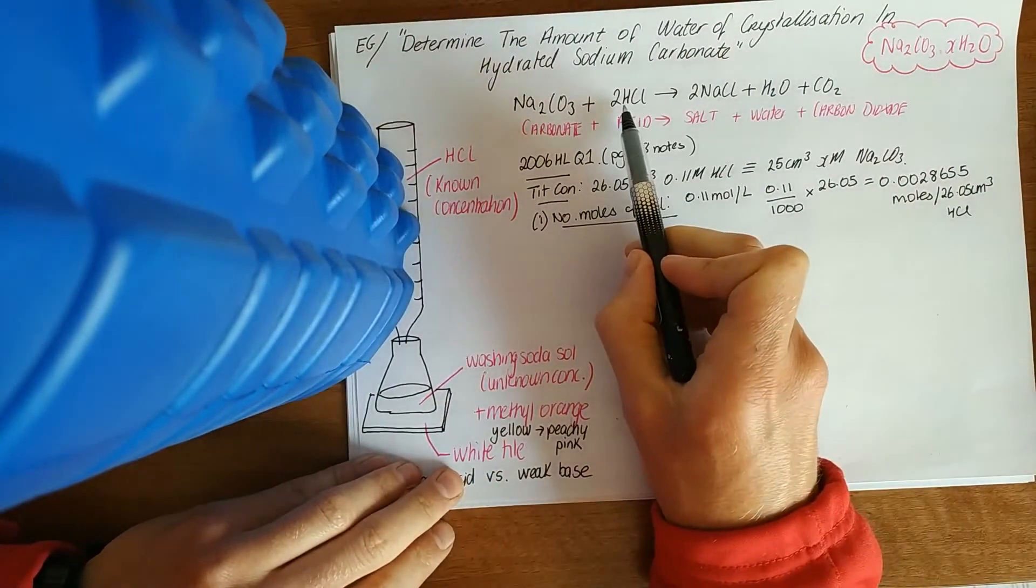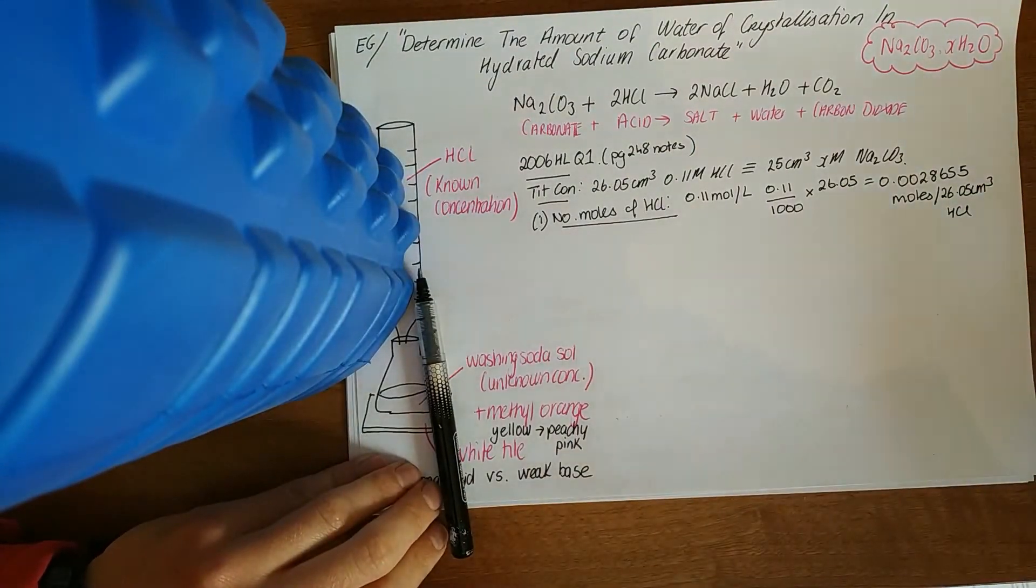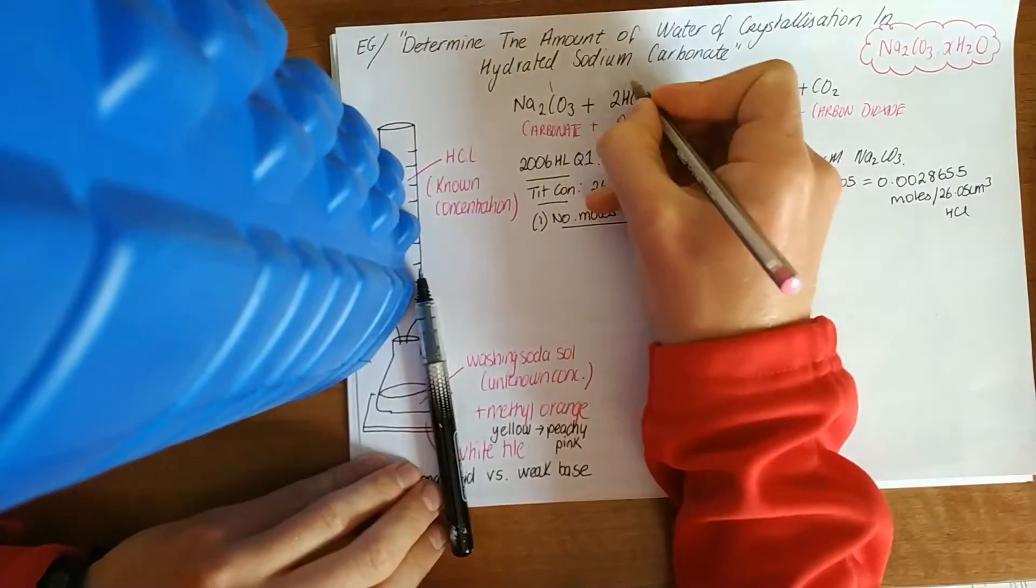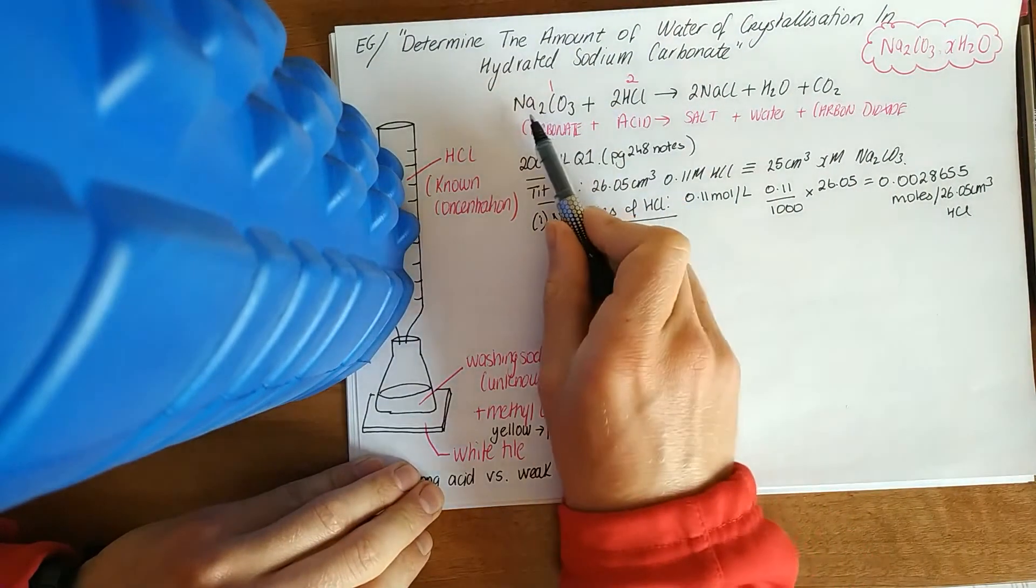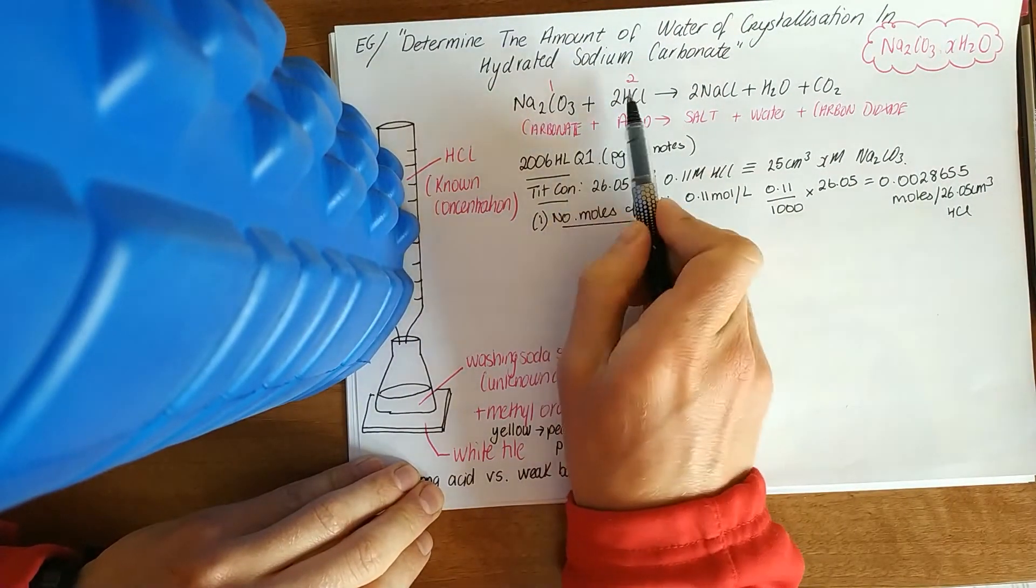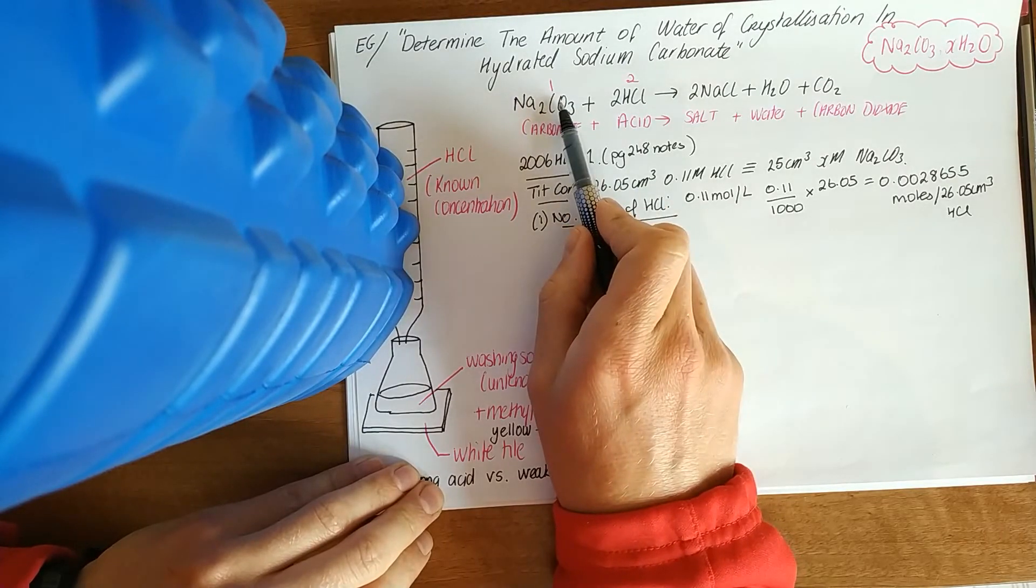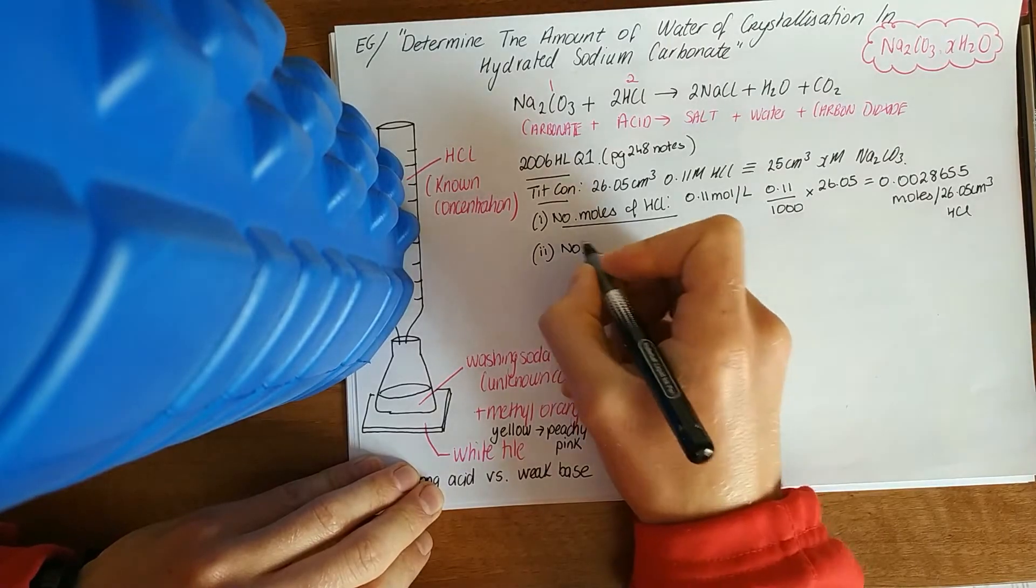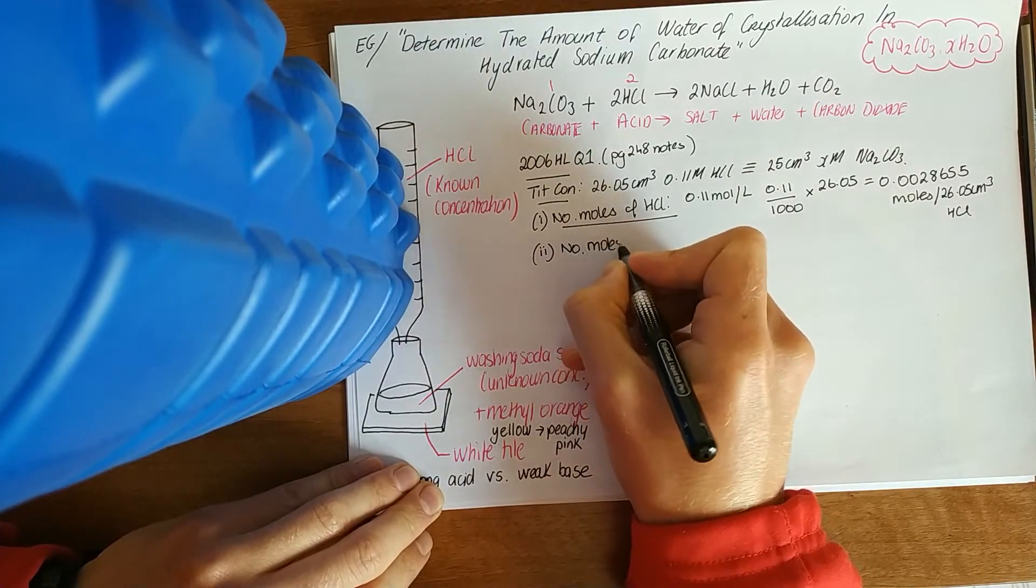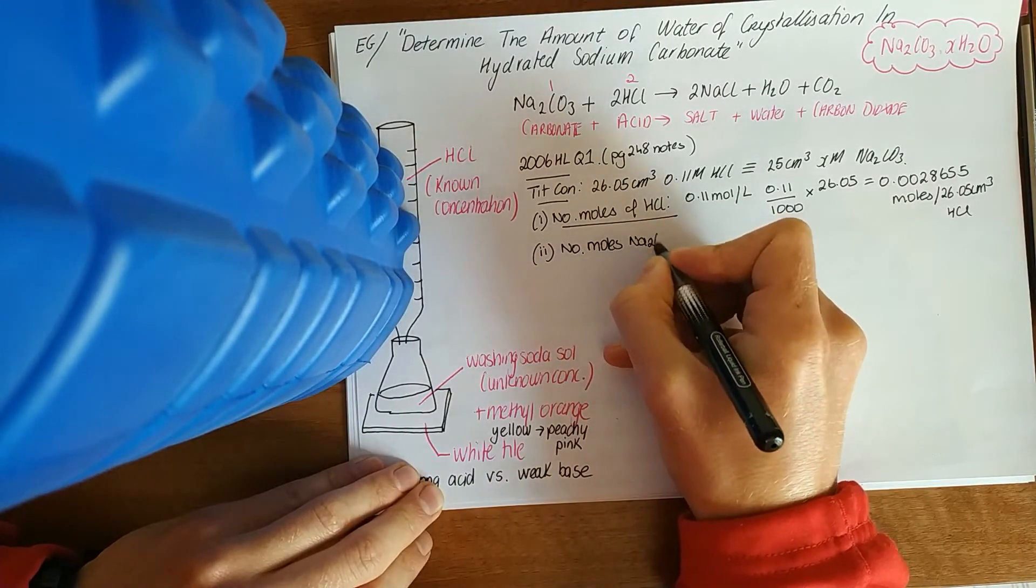So you get 0.0028 moles in 26.05 centimeters cubed. You don't need to write them all down, but never delete this number in your calculator. Now once we know this is the number of moles, you would have seen in stoichiometry before, the ratio in which they react is 1 is to 2.